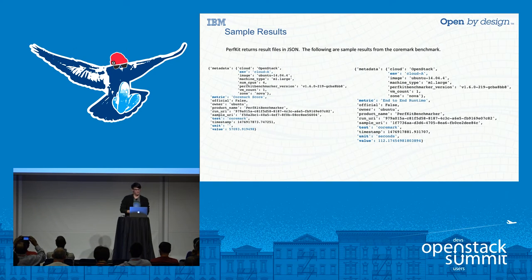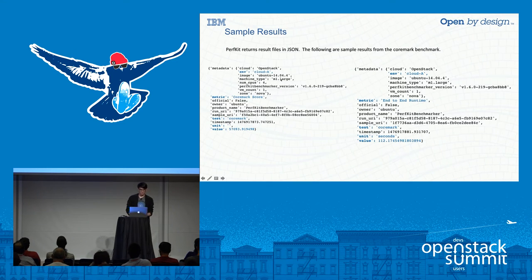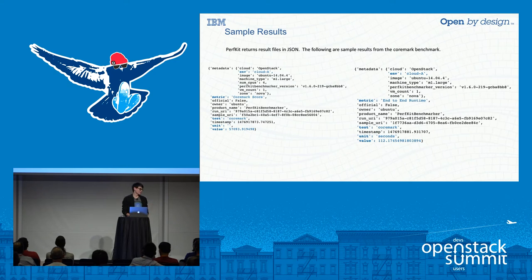PerfKit by default returns results in JSON — you can optionally return them as CSV. In the JSON result the metric field is highlighted as the CoreMark score, then you have the test that was run — here we ran CoreMark — the value, the unit (no unit since it is a score), and the metadata dictionary that we passed in. Typically you might import these into a spreadsheet, but we prefer a systematic way to analyze and visualize our data — and that is where Ted's contribution comes in.